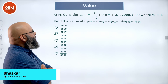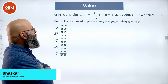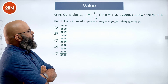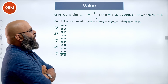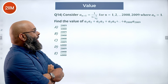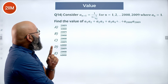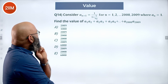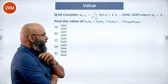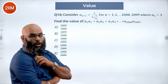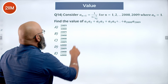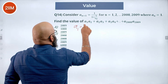Consider the recurrence a(n+1) = 1 / (1 + 1/a(n)) for n = 1, 2, 3, 4, up to 2009, where a(1) = 1. Find the value of a(1)·a(2) + a(2)·a(3) + a(3)·a(4) + ... and so on. We are given a(1) = 1.